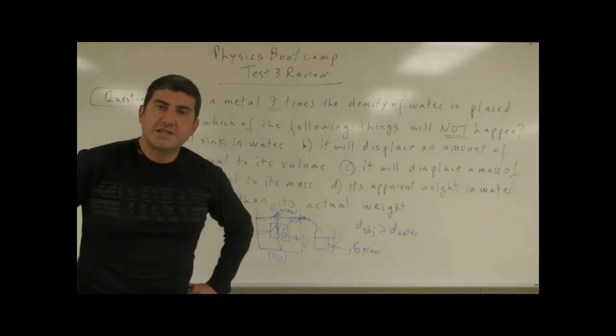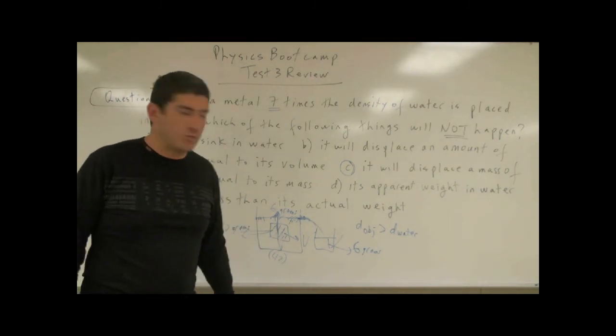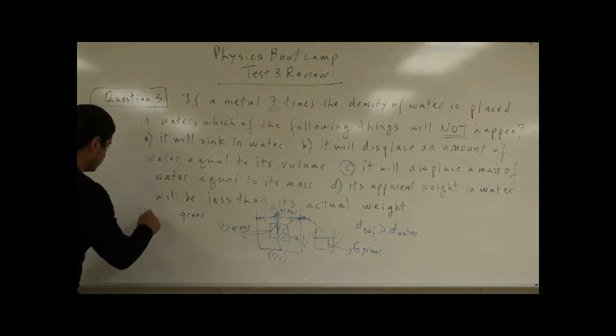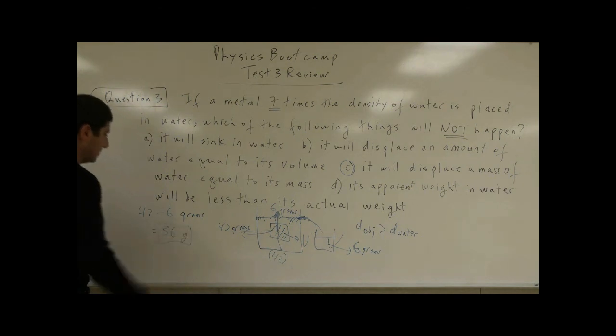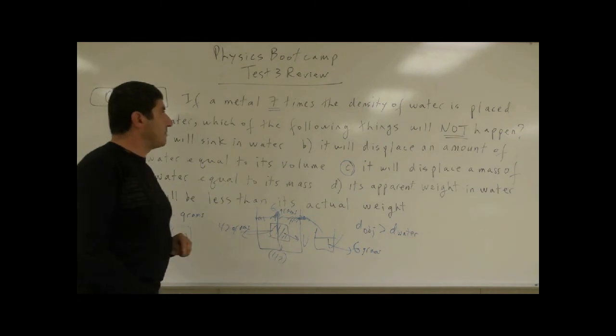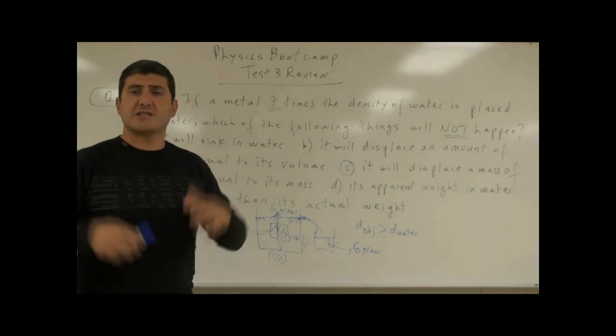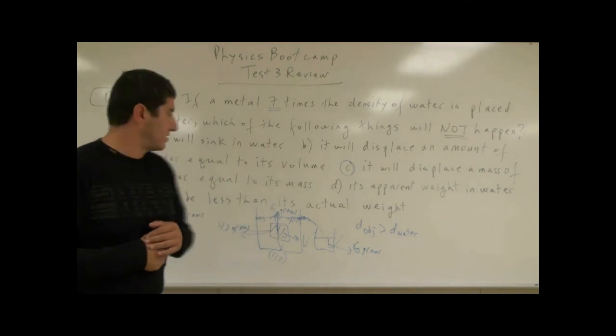So if its mass is 42 grams and the buoyant force on the object is 6 grams, so what is its apparent mass going to be? What is it going to feel like in water? 42 minus 6, which is equal to 36 grams. So that could be a quick question, too. It could have said, if a metal is seven times the density of water, it's placed in water, and if its mass is 42 grams, what is its apparent mass going to be?